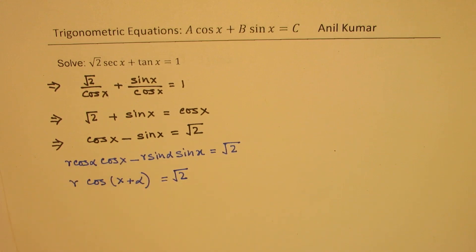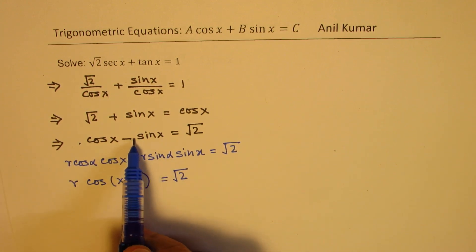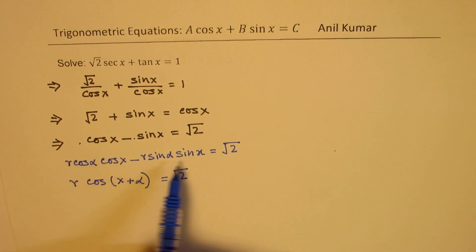Now how did we get this equation? We made a substitution which is, we substituted r cos alpha for 1 and r sin alpha for 1. And then we got this form and we wrote it in the fashion given.